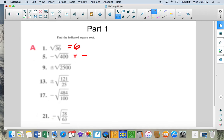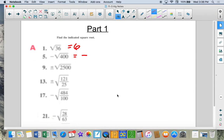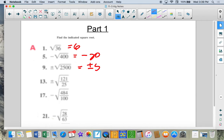Square root, the negative is outside, so the opposite of 400, square root is 20. Plus or minus, square root of 2,500, gives you 50. So it's going to be plus or minus 50.